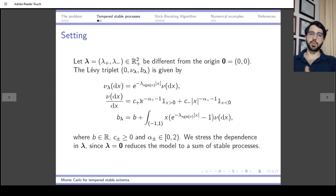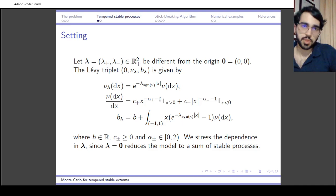This Levy measure is absolutely continuous, and the density is of the form x^{-α_+ - 1} on the positive half line and |x|^{-α_- - 1} on the negative half line, with different coefficients but always polynomially blowing up.